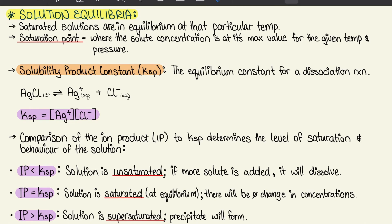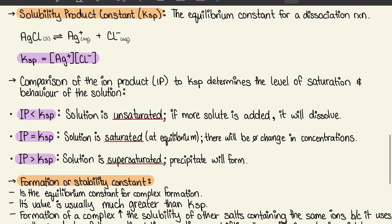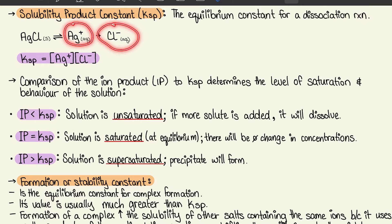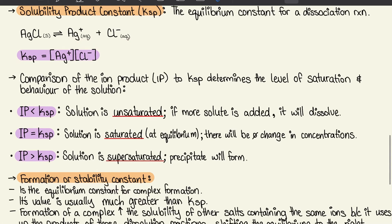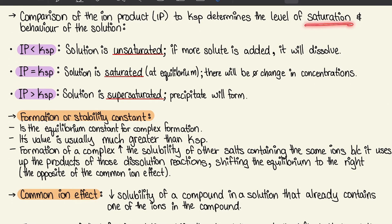Section 9.3 covers solution equilibria. Saturated solutions are in equilibrium at a particular temperature, where solute concentration is at its maximum. The solubility product constant (Ksp) is the equilibrium constant for a dissociation reaction. For AgCl → Ag⁺ + Cl⁻, Ksp = [Ag⁺][Cl⁻], using only product concentrations.